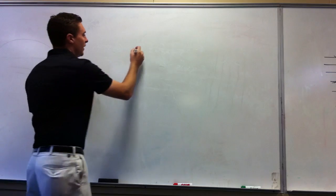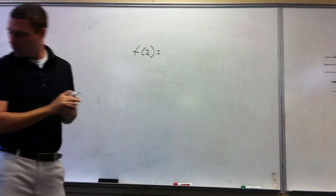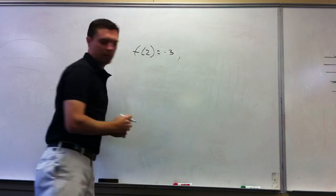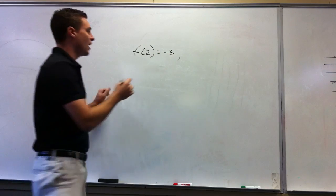It says f of 2 equals negative 3. And then it says f of negative 2 equals 5.